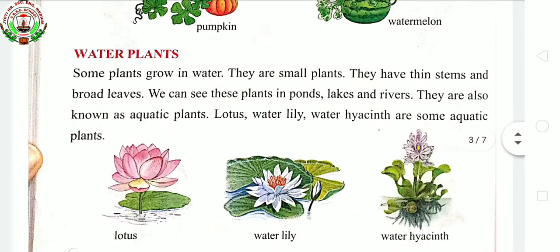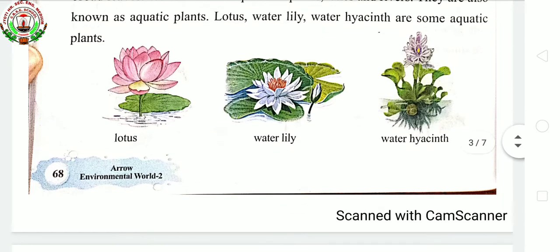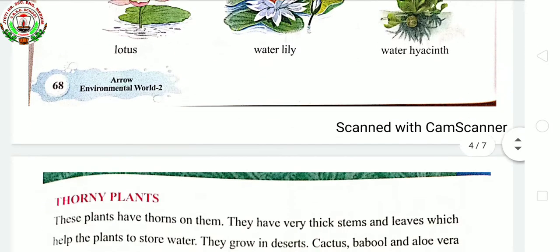Next, water plants. These plants are also known as aquatic plants. They are smaller in size, having thin stems and broad leaves. Examples include lotus, water lily, and water hyacinth.